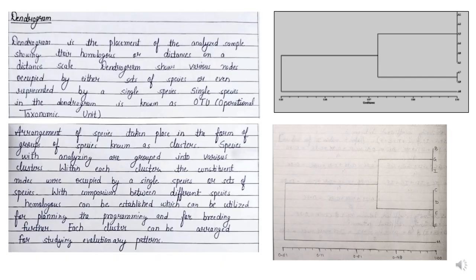As we have discussed, a dendrogram is the placement of analyzed samples showing their homologues or distances on a distance scale. A dendrogram shows various nodes occupied by either sets of species or a single species. A single species in the dendrogram is known as OTU, or operational taxonomic unit.